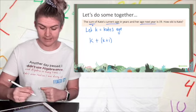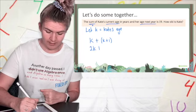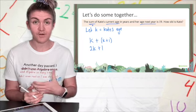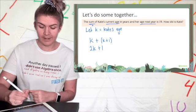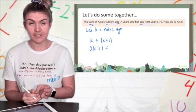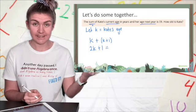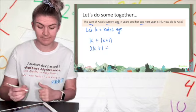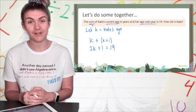I can simplify this. I've got two k's being added together, which is 2k plus one. So so far I have an expression, but I need an equation and I need to know what this equals. Well her age now plus her age next year together equals 19. So there is my equation.